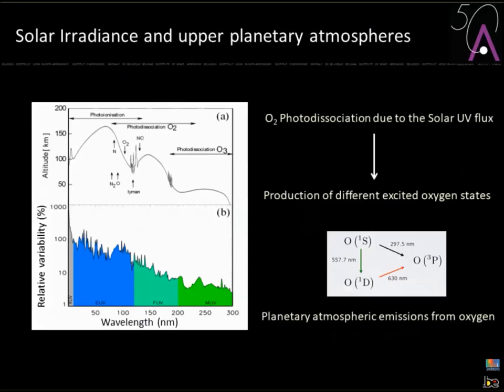These excited states want to return to the ground state, so they de-activate by emission. Going from O(1D) to O(3P) gives the red line; going from O(1S) through O(1D) gives the green line. This produces the typical atmospheric dayglow emission from any planet or moon that has molecular oxygen, atomic oxygen, water (which can be photodissociated), or CO2 — as long as atomic oxygen is involved.